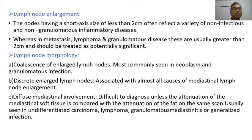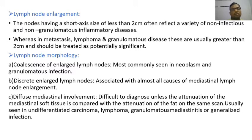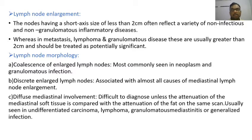Diagnosis of lymph node abnormalities is based on lymph node enlargement, morphology, attenuation, and enhancement. Regarding the enlargement pattern, nodes with a short axis of less than 2 cm reflect non-infectious and non-granulomatous inflammatory diseases, whereas metastasis, lymphoma, and granulomatous diseases are usually greater than 2 cm. Coalescence of enlarged lymph nodes is seen in neoplasm and granulomatous infections. Mediastinal widening is difficult to diagnose unless attenuation of mediastinal soft tissues is compared with fat attenuation — usually seen in undifferentiated carcinoma, lymphoma, or granulomatous mediastinitis.